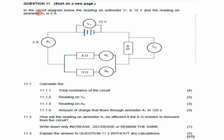Question 11 says in the second diagram the reading on voltmeter V1 is 12 volts and the reading on ammeter A1 is 2 amperes. Question 11.1 says calculate the total resistance of the circuit. Looking at the diagram, the 6 ohm resistor and the 3 ohm resistor are connected in parallel, and only the 4 ohm resistor is connected in series. To calculate the total resistance, we need the effective resistance of the parallel resistors and then add it to the series resistor.